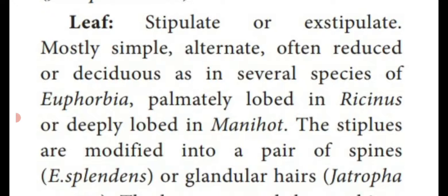In some xerophytic plants the leaves are reduced in the form of thorns. Or they are deciduous — meaning they fall off from the plant body — in several species of Euphorbia. In Ricinus communis, the leaf looks palmately lobed, resembling our palm. In Manihot utilissima — that means tapioca, Maravalli kilangu — the leaves are deeply lobed.